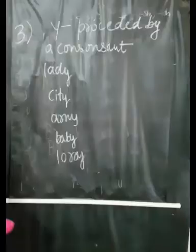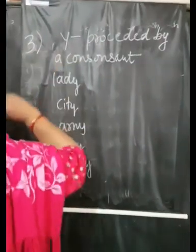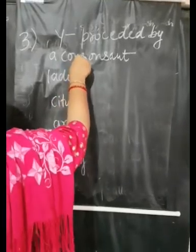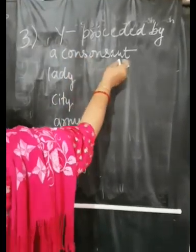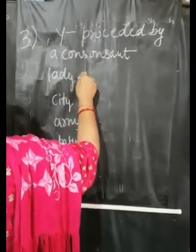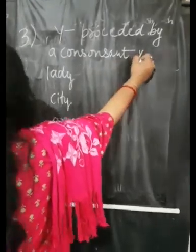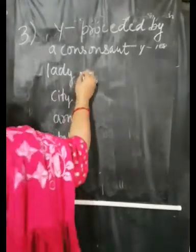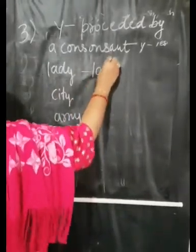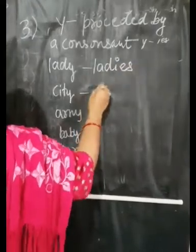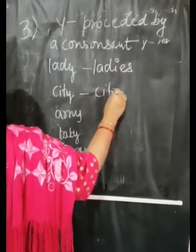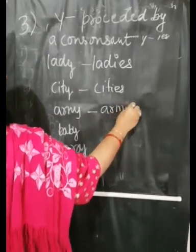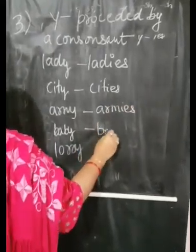This is Rule 3. Nouns ending in Y preceded by a consonant form their plural by changing Y to IES. For example: lady becomes ladies, city becomes cities, army becomes armies, baby becomes babies.